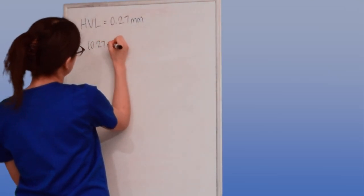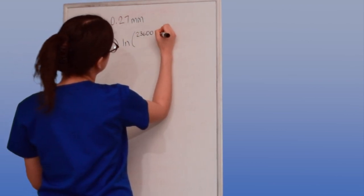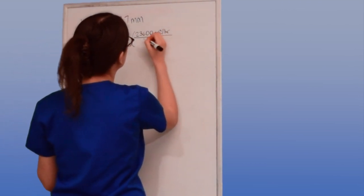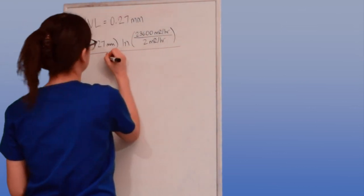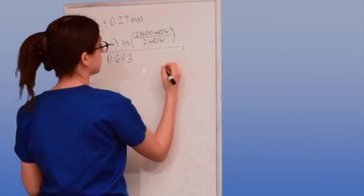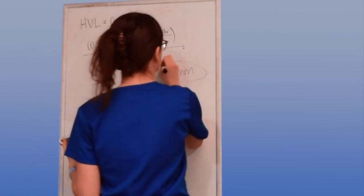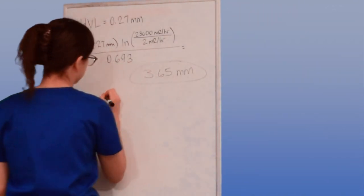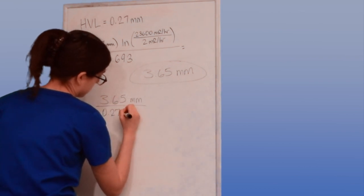And let's see how that works out. I know my half value layer is 0.27 millimeters. Then I take the natural log of 23,600 divided by 2, which is my initial intensity divided by my final intensity because I want it to be 2 millirems per hour, and divide the whole thing by 0.693. And we get 3.65 millimeters. So if I shield this vial with 3.65 millimeters of lead, the intensity would be reduced down to a level safe for public areas.